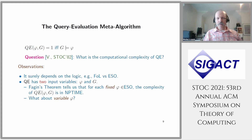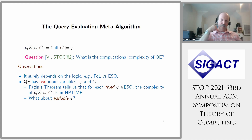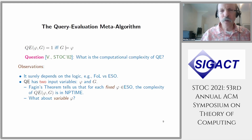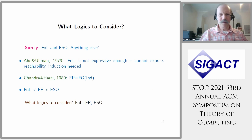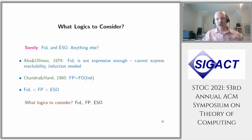Query evaluation has two input variables: the sentence φ and the graph G. Fagin's theorem tells us that for each fixed sentence in ESO the complexity is in NP, but what happens when we treat the sentence as a variable rather than fixing it? We have two very different parameters: the database size and the query size. In 1979, Aho and Ullman — who should be recognized as this year's Turing Award recipients — showed that first-order logic is not enough; in particular, it cannot express graph reachability.